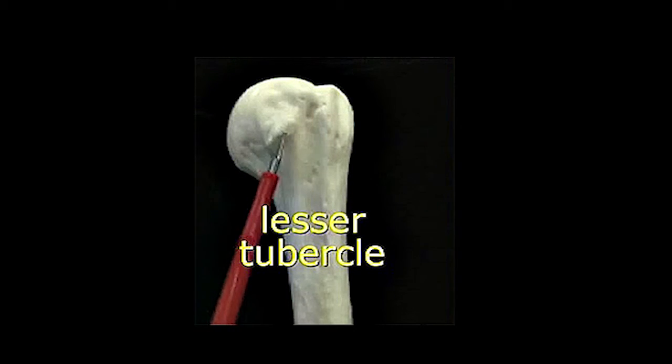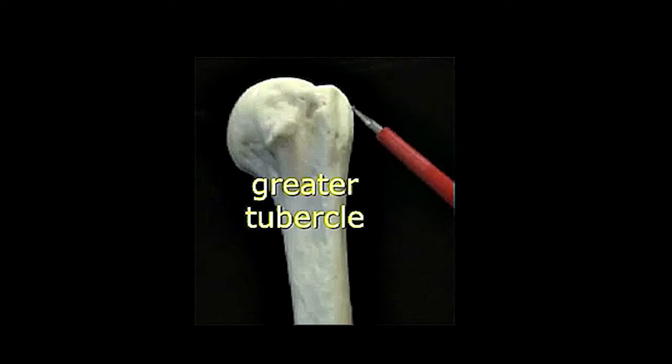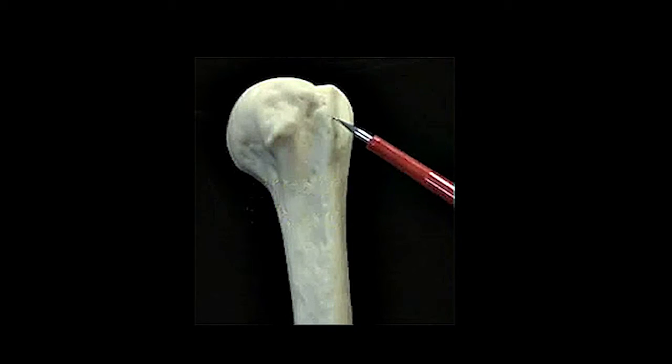Then the lesser tubercle. This will serve for muscle attachments. It's called lesser either because it's inferior to another one I'll show you, or it's lesser in size than this second one I'm going to show you right here, which will be the greater tubercle. The greater tubercle there will be seen both in this anterior view, and eventually in the posterior view.